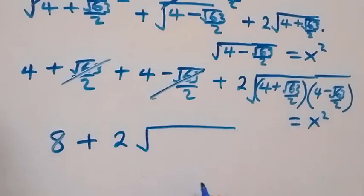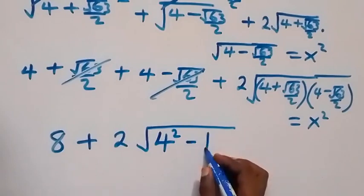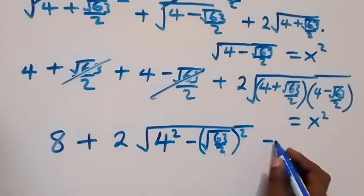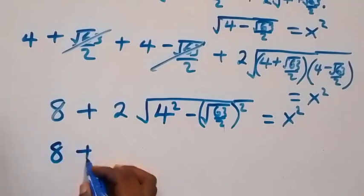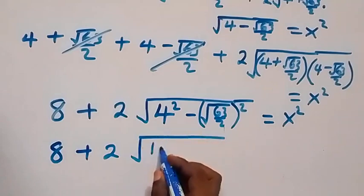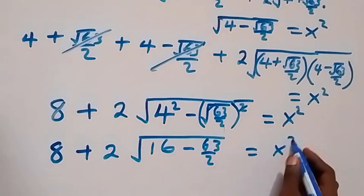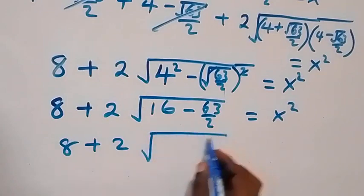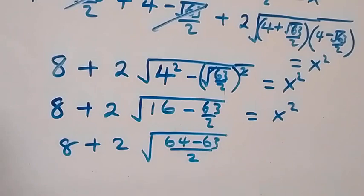We have 8 plus 2 times the root of (4 plus root 63) over 2 times (4 minus root 63) over 2. This is like a conjugate, a difference of squares. In the next step, we have 8 plus 2 times root of [(4 squared minus root 63 squared) over 4], which gives 16 minus 63 over 4, equals x squared.